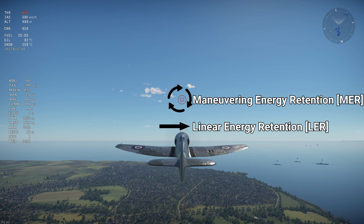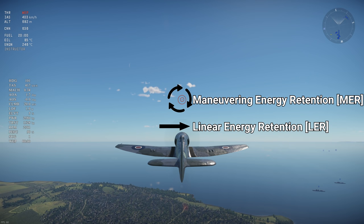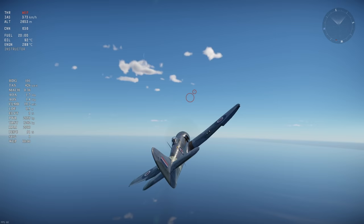Turning is very different from going in a straight line and uses different aircraft characteristics, and often an aircraft with good MER doesn't have good LER and vice versa. That's why you need two different metrics to adequately measure an aircraft's energy retention in these two different situations.